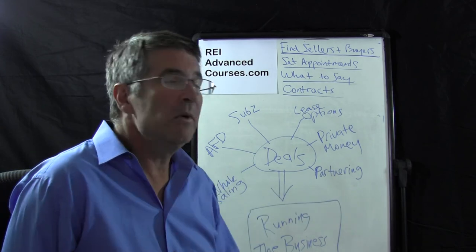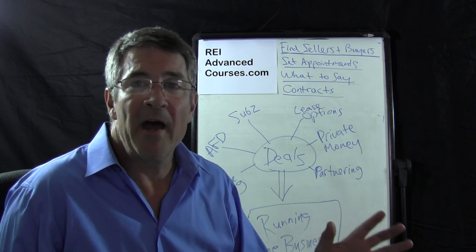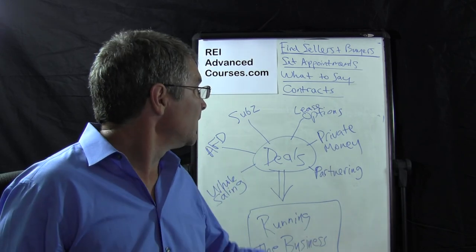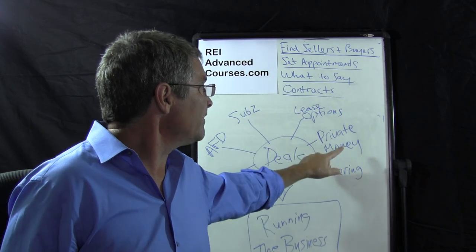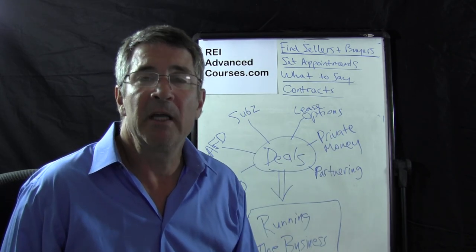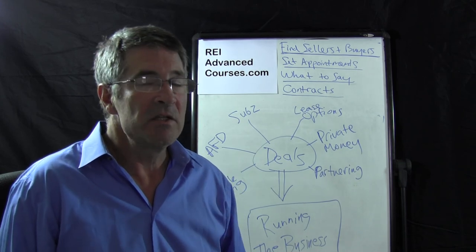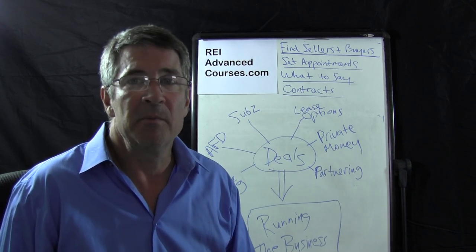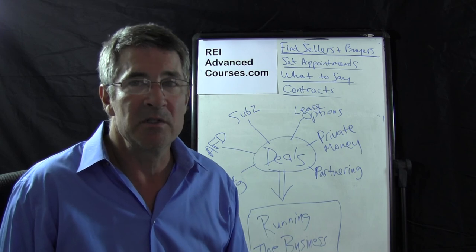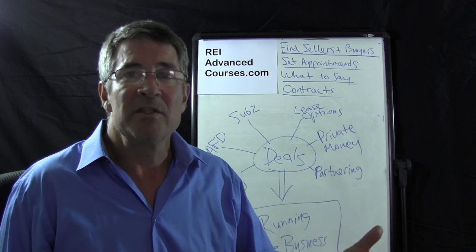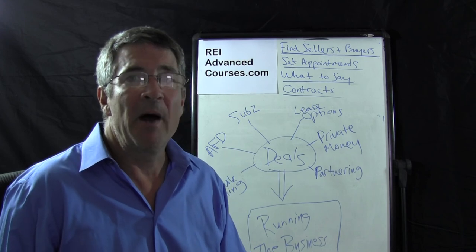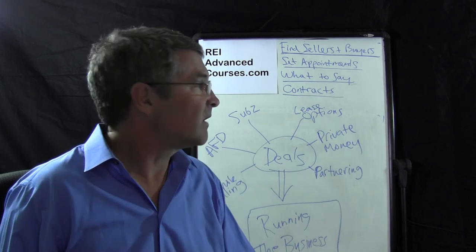Partnering with people — sometimes people have money and they don't have time, and they'll be able to help you with the deal. Getting private lenders to lend you money to get a private mortgage. There are a ton of people out there with IRA money, maybe a hundred thousand dollars, and they don't like the market and want something more stable. Private money is a wonderful way to buy a property for all cash.